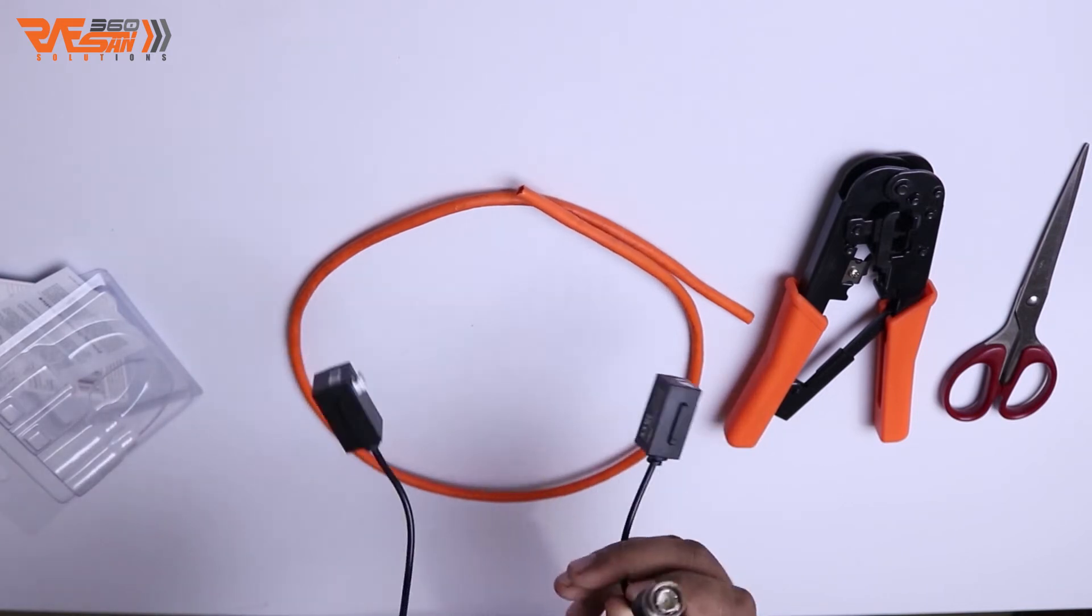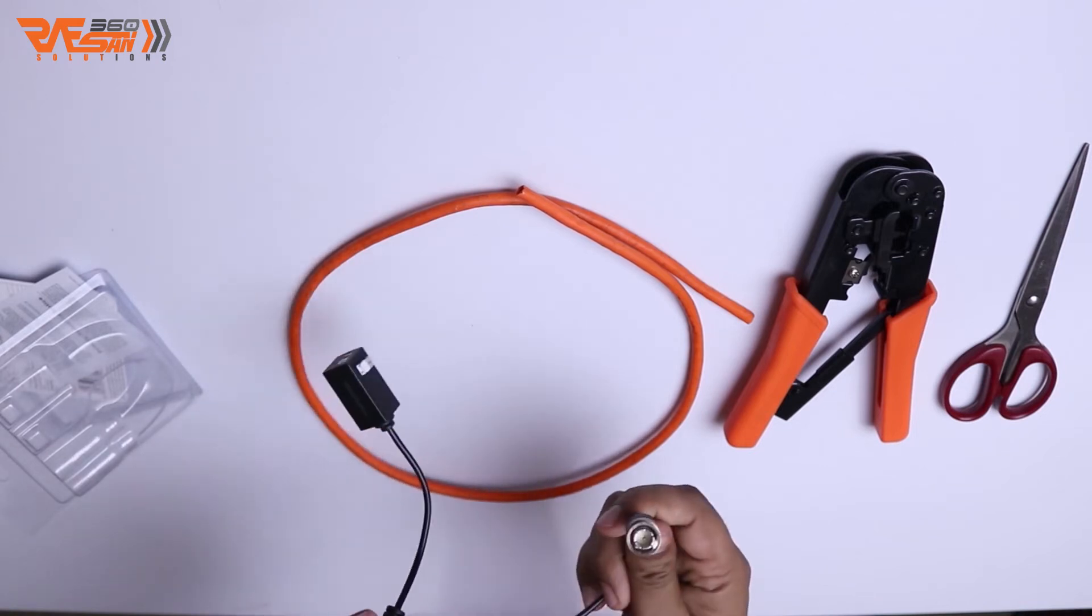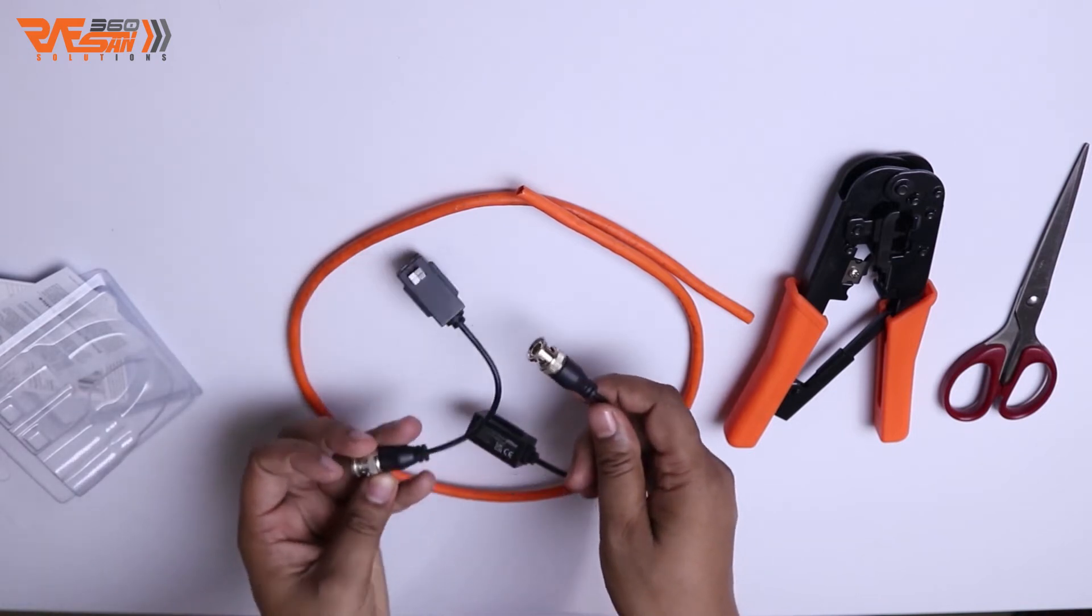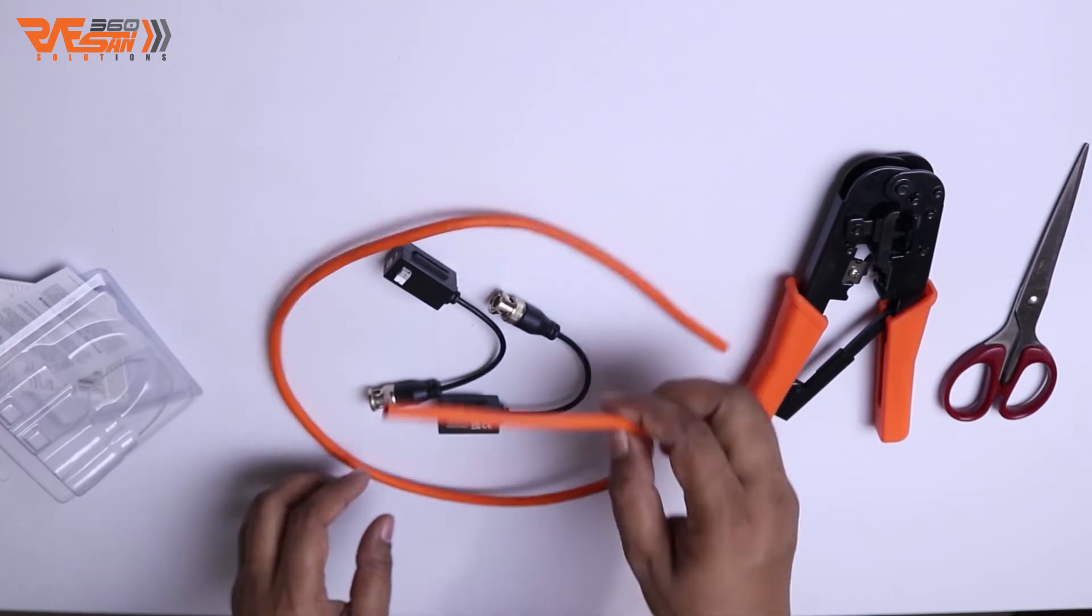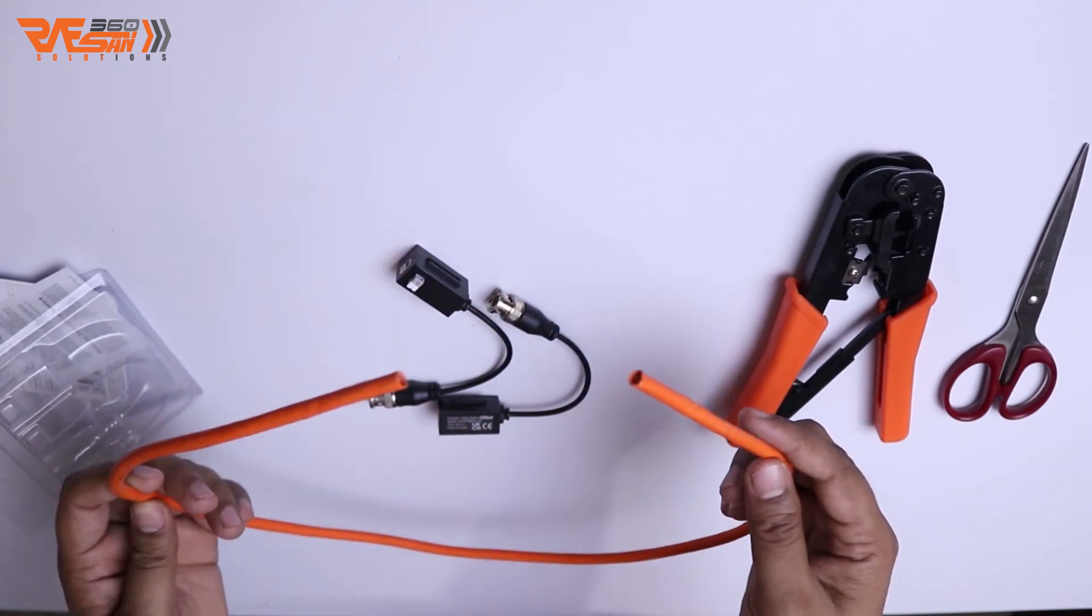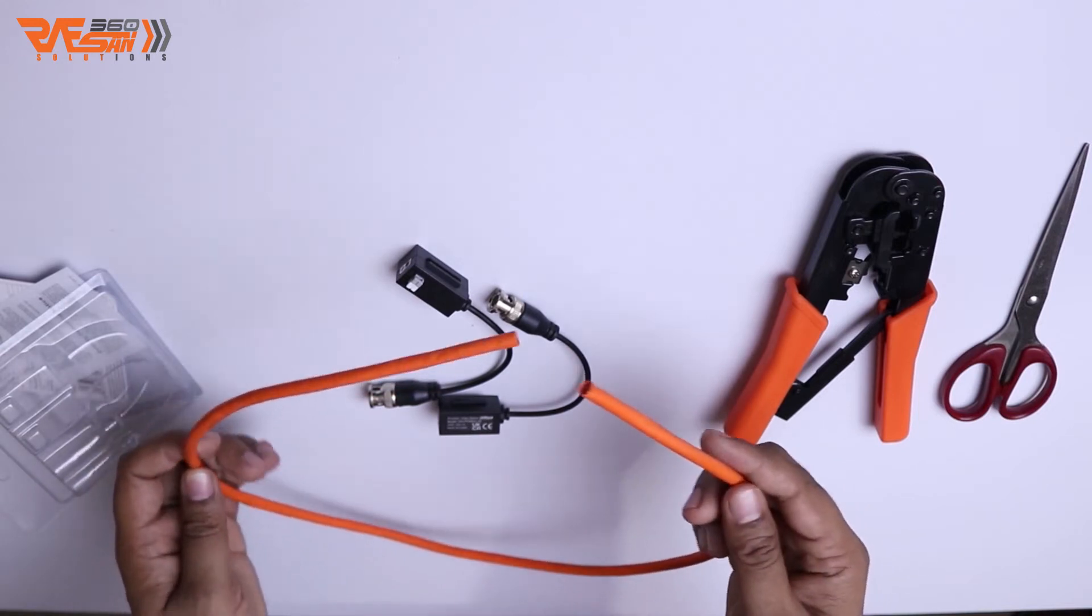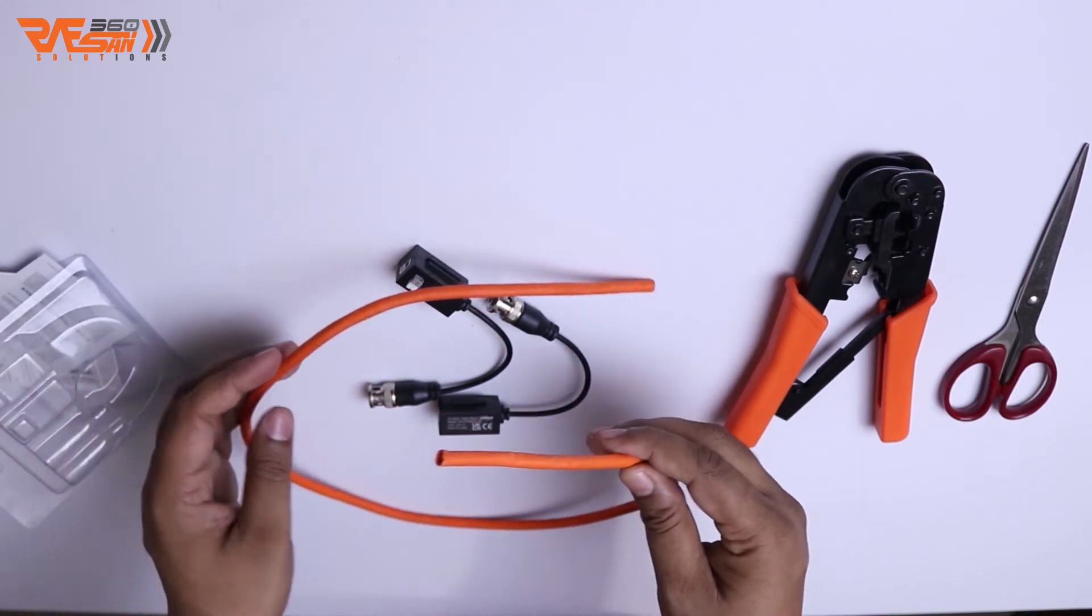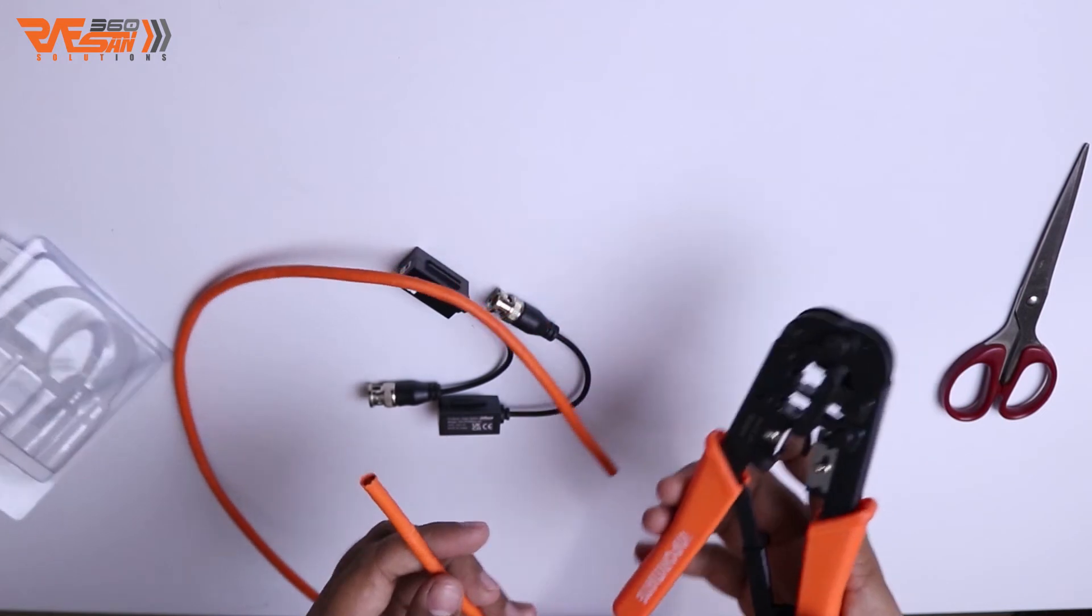This is the camera and this is the spare camera. We have about 1 meter of cable for the camera and video balun. So we have to cut the cable and prepare it for connection.